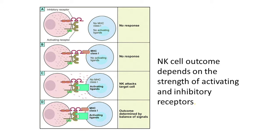If the cell is perfectly happy and expresses MHC class 1, this is recognized by the KIR, and the NKG2D molecule has nothing to bind to — so there is no response. This is the normal situation between cells in the body. If, however, you activate the ligands on the surface through stressing the cell, the NK cell will kill, particularly if the MHC molecule is dropped off the surface. Viruses are very good at down-regulating that. In other circumstances, it's the balance between the inhibitory and activating signal that determines whether there is killing.